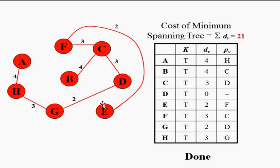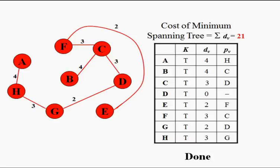Looking at the completed spanning tree without the markings, every vertex is connected just once: e to f, c to b, c to f, and c to d are each connected once. We don't take a path from f to b or b to e because those would form cycles — e is already in the connected set and doesn't need to be connected again.